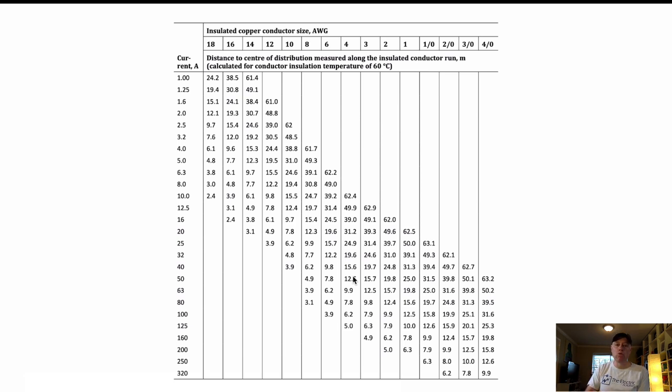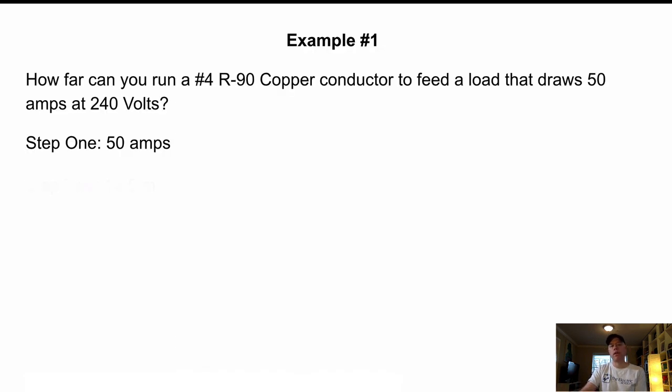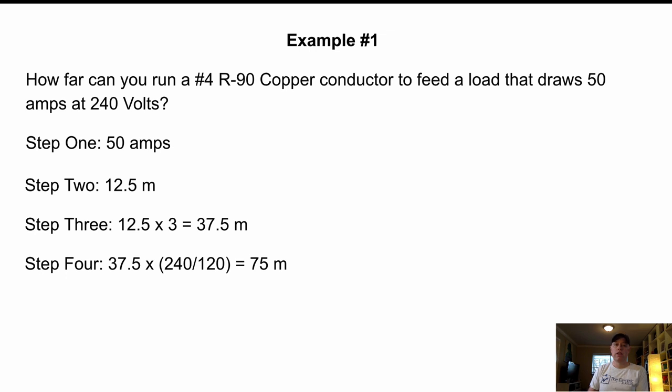So we're determining that we can run 50 amps on a number four for 12.5 meters without having a negligible volt drop of more than 1%. This is, remember, this is only at 1% and 120 volts. So we can add some stuff later as we go. So step one is 50 amps. We determined step two is 12.5 meters. Our step three is because that table is based on 1% and not 3%. We can multiply that by three. So we're going to go 12.5 times three is 37.5 meters.